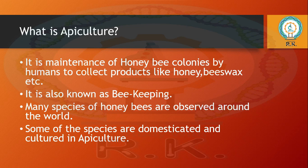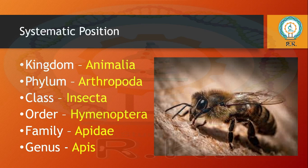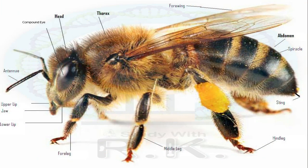Not all species are domesticated — only some are domesticated and cultured in apiculture. The systematic position of honey bee is: Kingdom Animalia, Phylum Arthropoda, Class Insecta, Order Hymenoptera, Family Apidae, and Genus Apis.